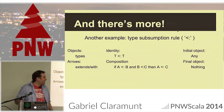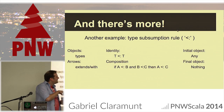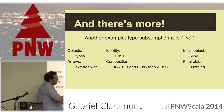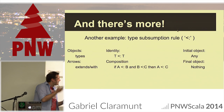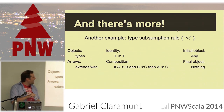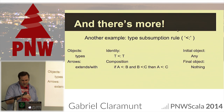This is a different category. In the subtype category, Nothing is the final object — it is the subtype of all other objects — whereas in the category of types and functions, Nothing is the initial object.